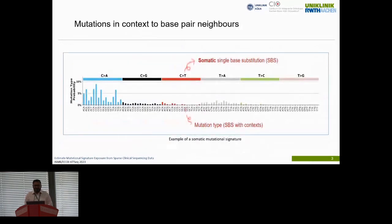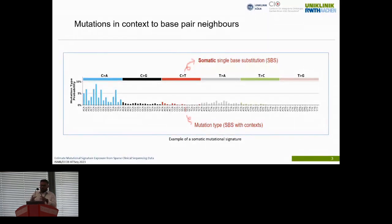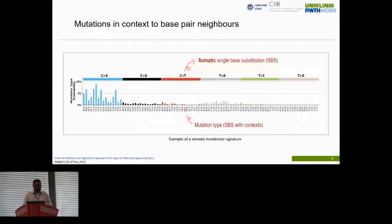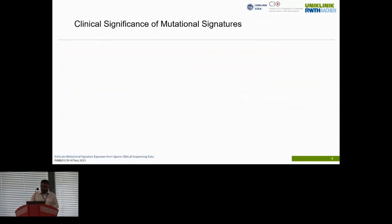These signatures reflect mutations in the context of base pair neighbors. In principle, there are six pairs of somatic base pair substitutions, and we look at what neighbors in the sequence are present around the mutation. This gives the actual signature. Basically, a mutational signature is a snapshot of mutations over a timeline in the context of their base pair neighbors.